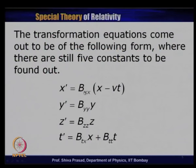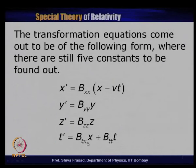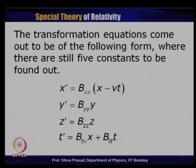The transformation equations eventually turn out to be of the following form: x' = bxx(x − vt), where bxx is a constant yet to be evaluated. y' = byy·y, z' = bzz·z, and t' = btx·x + btt·t. Galilean transformation is a special case where bxx=1, byy=1, bzz=1, btx=0, and btt=1. Now we have to evaluate these constants by invoking the postulates of special relativity — that is what we are going to do.